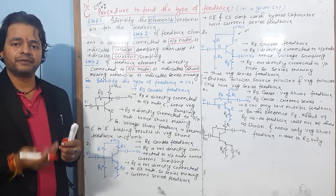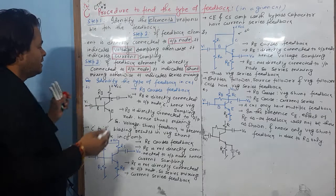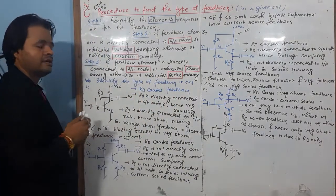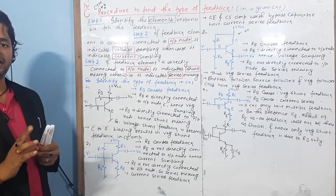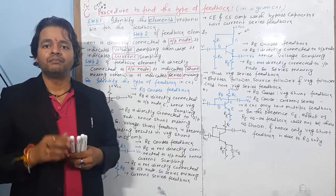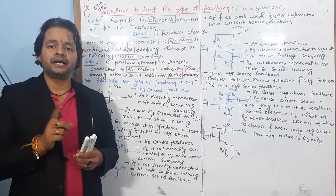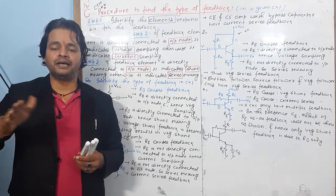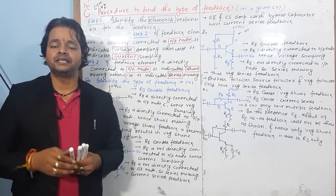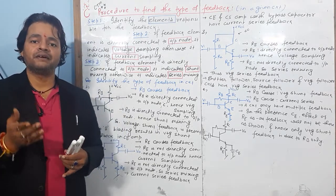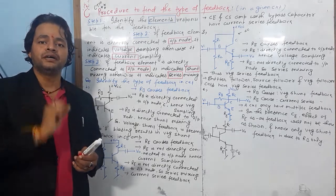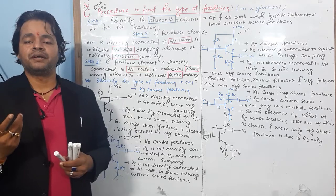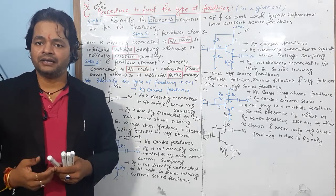Otherwise, it indicates series mixing. To clarify: voltage or current indicates the output side — the output node of the basic amplifier and the input of the feedback network. Series and shunt indicate the input side — the output of the feedback network and the input of the basic amplifier.